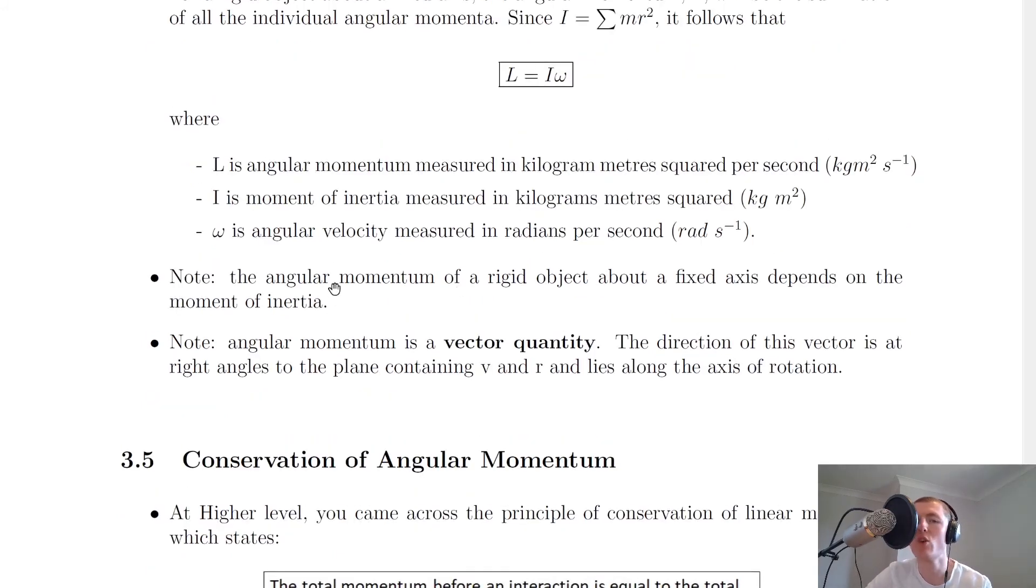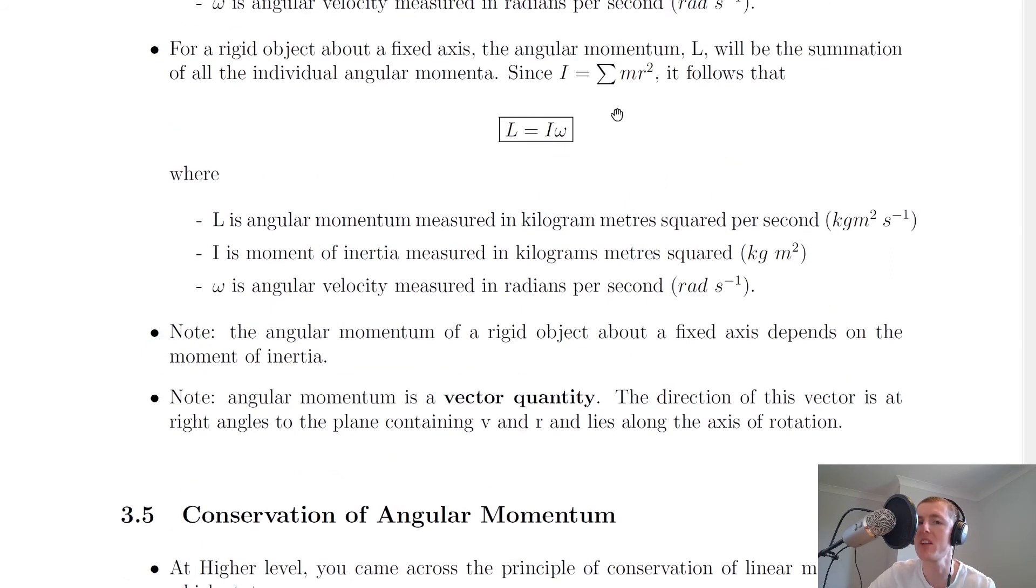And lastly, it says here to note that the angular momentum of a rigid object about a fixed axis depends on the moment of inertia, we can clearly see that.